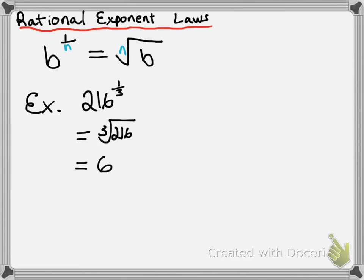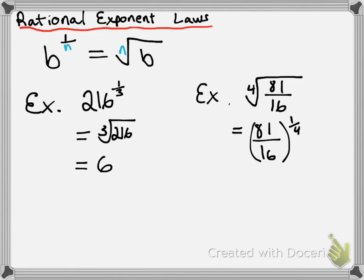Let's take a look at a little bit more complex example. Suppose I wanted to take the fourth root of 81 over 16. There is a property of taking roots where, if you have the root of a fraction, you can take the fourth root of the top and the bottom. Let's show that using this example. If I'm taking the fourth root of 81 over 16, according to the exponent law, that's the same as putting it to the power of 1 over 4. So I can rewrite this as 81 over 16 to the power of 1 over 4. Both the 81 and the 16 are being put to the power of 1 over 4, so I'm going to rewrite this as 81 to the power of 1 over 4, over 16 to the power of 1 over 4.